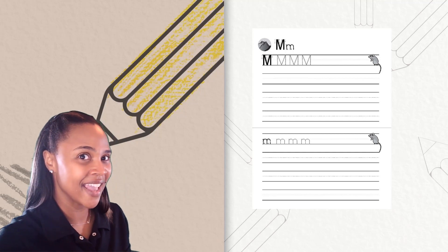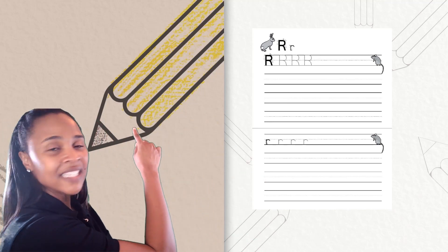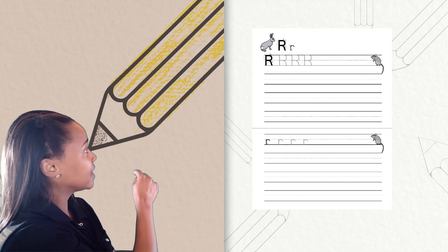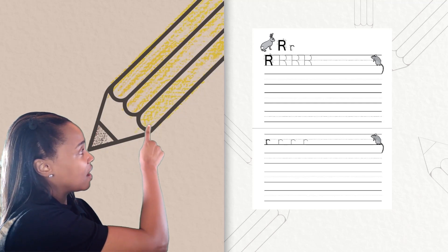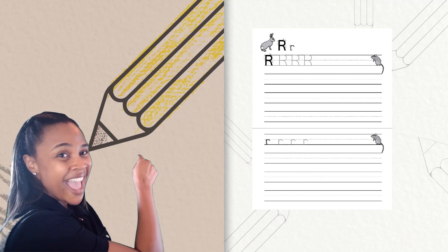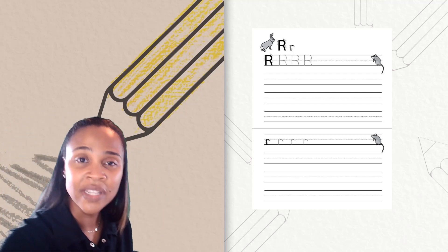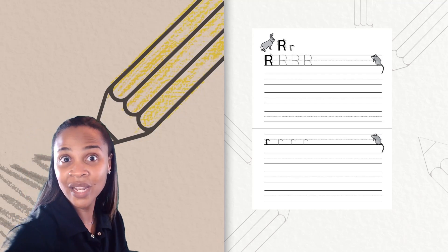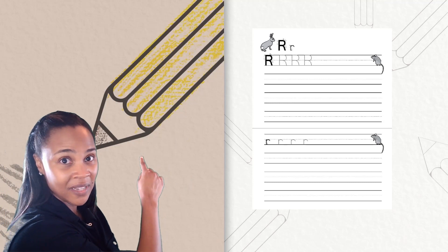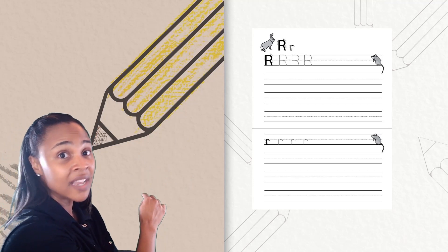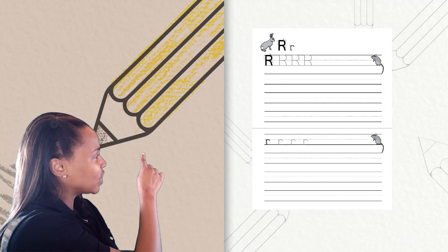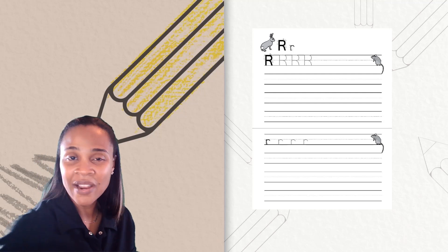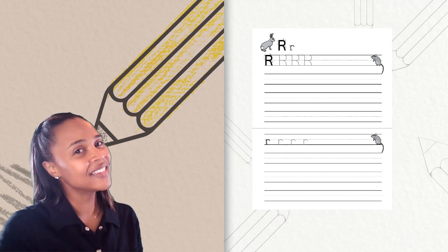Now let's make our uppercase R. Ready? Starting at the top line, drag our line down to the bottom line, come back up to the top line, make a curve to the right, and then make a slant line going down to the bottom line — that's the uppercase R. Now let's try the lowercase R. Starting at the middle line, drag our line down touching the bottom line, come back up and then curve it around at the middle line. Nice work — you just made your uppercase R and lowercase R. Nice work handwriting.